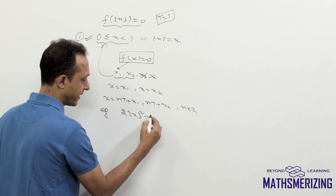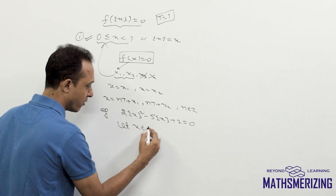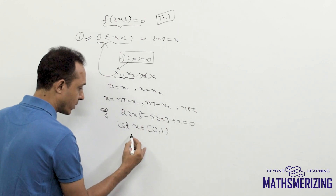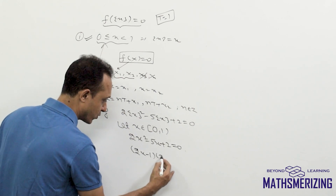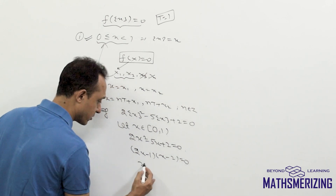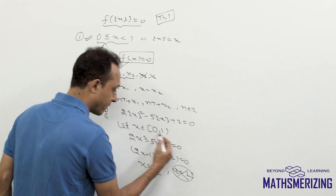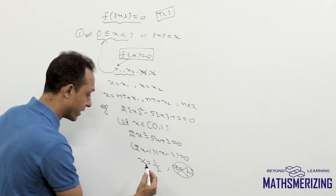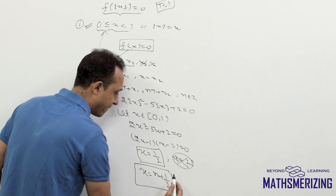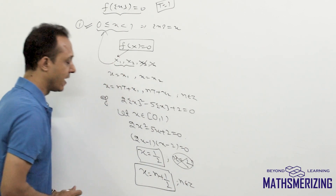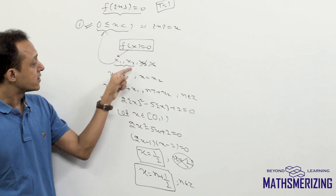For example: solve 2{x}² − 5{x} + 2 = 0. Let x ∈ [0, 1), so replace {x} with x: 2x² − 5x + 2 = 0, giving (2x − 1)(x − 2) = 0. So x = 1/2 or x = 2. Since 2 does not lie in [0, 1), the only valid answer in [0, 1) is x = 1/2. Generalizing: x = n + 1/2 where n ∈ ℤ.